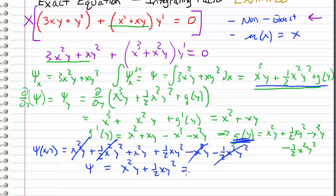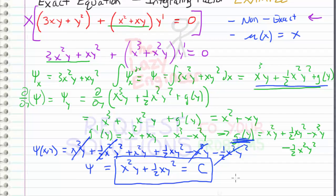We define this implicitly by setting this equal to a constant. So our answer to this differential equation is x squared y plus one-half xy squared equals c, a constant. Hopefully that was a good example. If you have any questions, feel free to drop a comment or send me a message. See you in the next video.